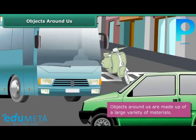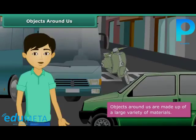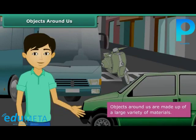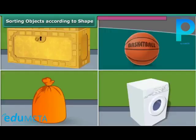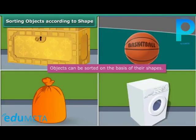Vehicles such as scooters, cars, and buses are made of steel. Therefore, we may say that objects around us are made up of a large variety of materials. A box is a cube or a cuboid, whereas a ball is a sphere. A laundry bag is cylindrical in shape, whereas a washing machine is cuboidal.